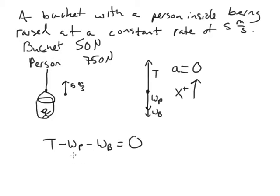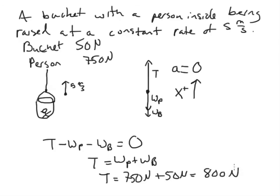Now we solve for tension so we take W_P and W_B to the other side. We get W_P plus W_B and that's going to be equal to 750 Newtons plus 50 Newtons equals 800 Newtons. And that's everything for this. Thank you very much.